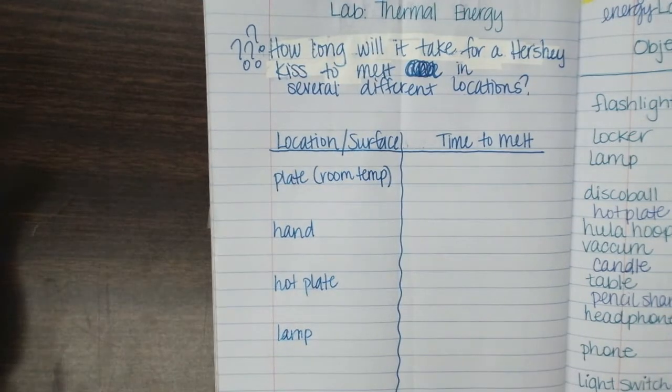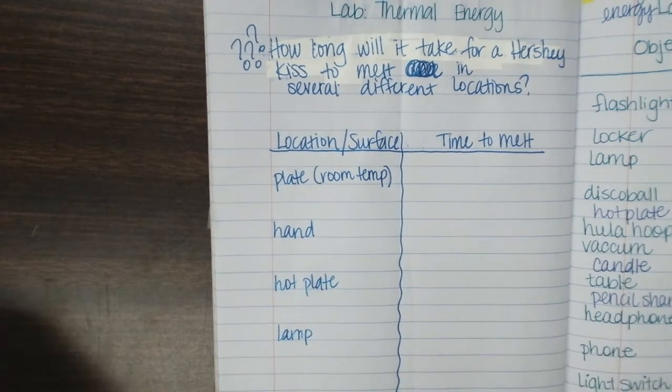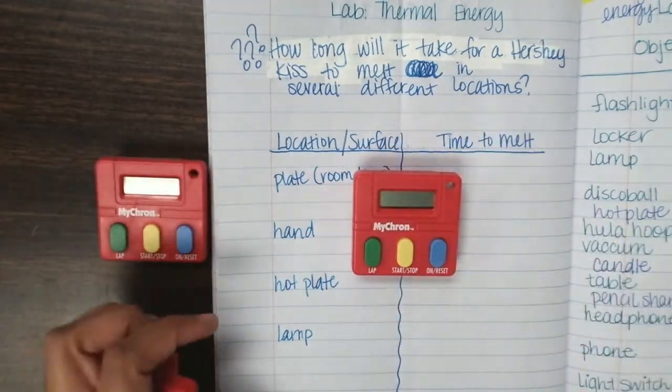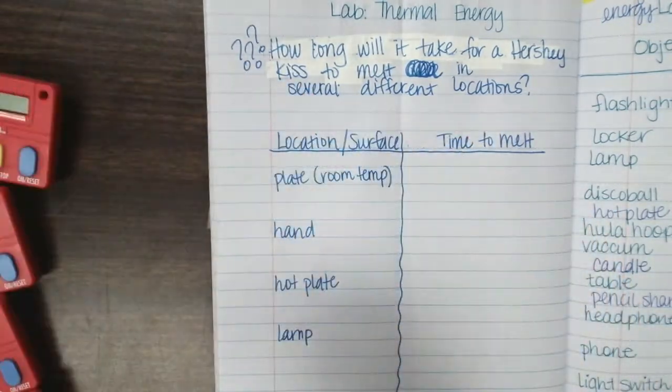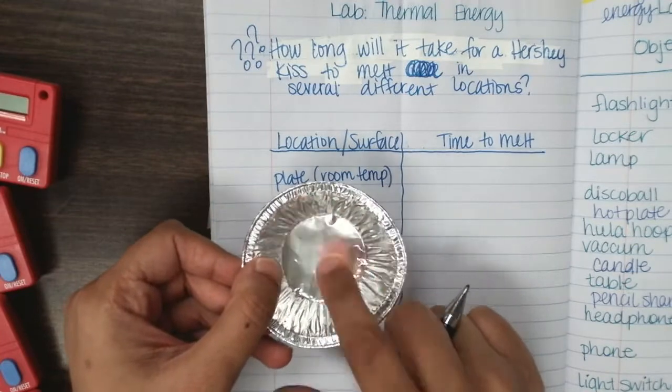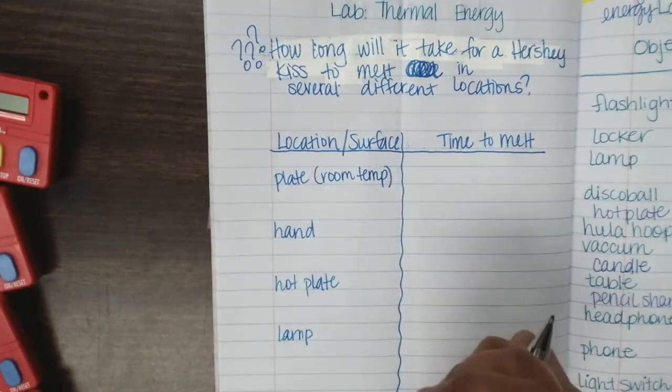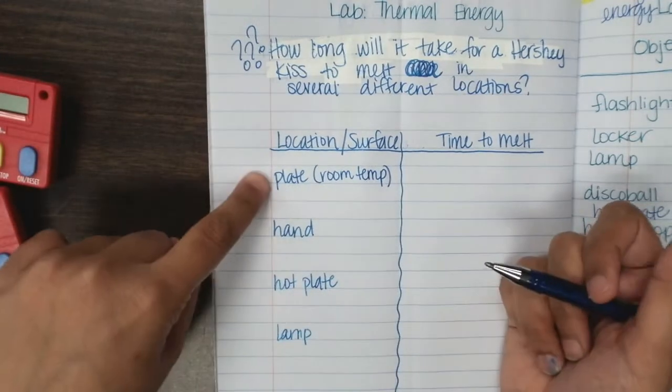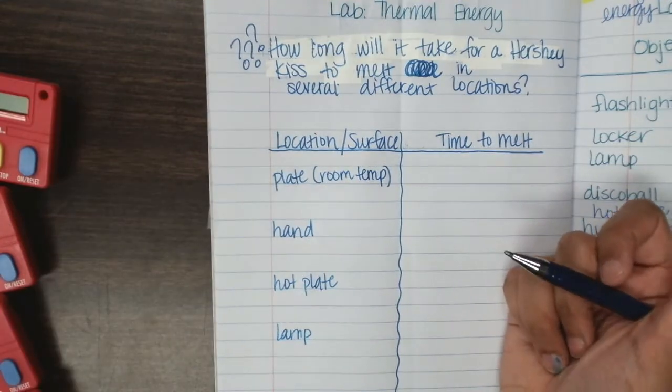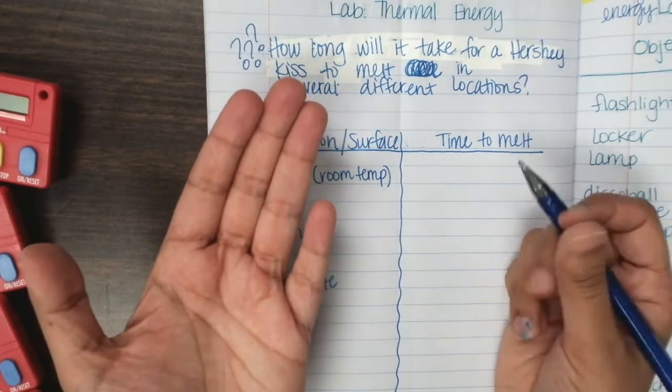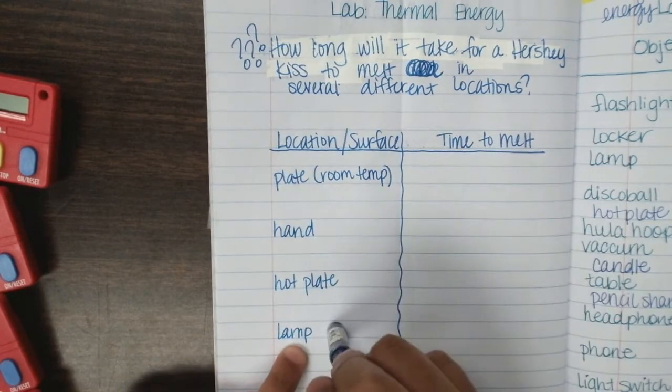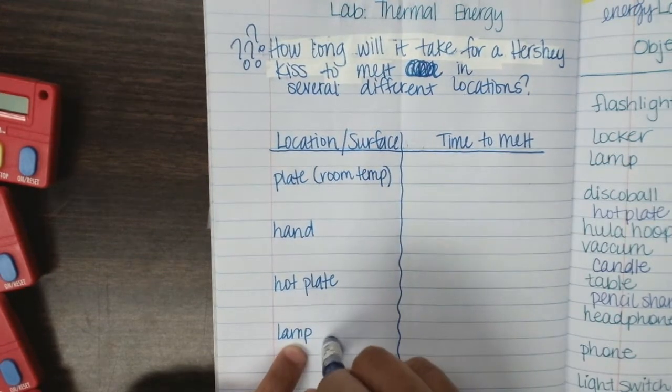So I have four timers. And then I have a tin foil for my Hershey kiss to sit on, on the hot plate. I have a plate for my Hershey kiss to sit on, and it's just going to sit at room temperature. I'm going to have it on my hand. And then I'm going to have it on a plate, but it's going to be near the heat source.